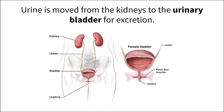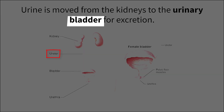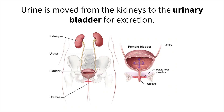When the urine is completely filtered based on the physiology of the body, it is moved down a tube called the ureter, which brings it to the final destination of the urinary bladder. The volume of the bladder increases and stretches as urine enters from the ureters.